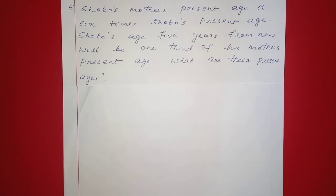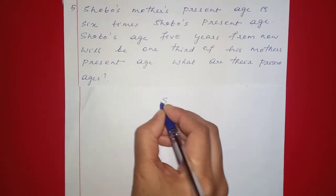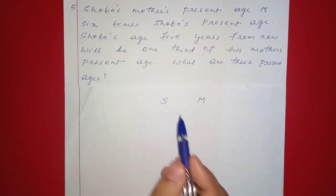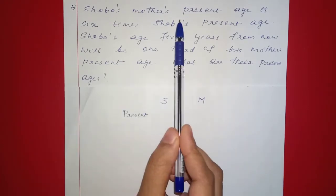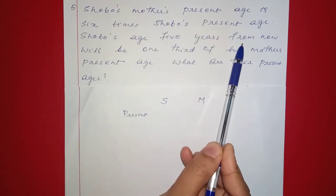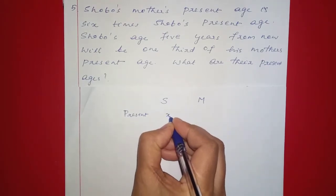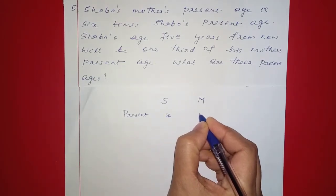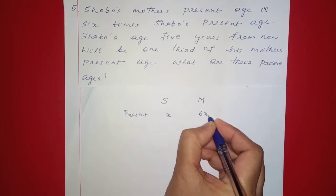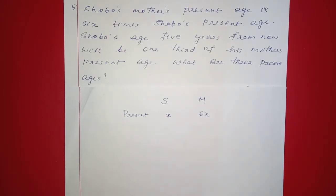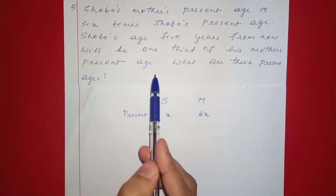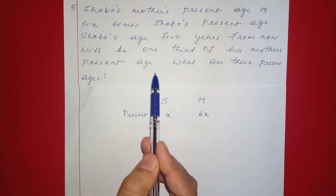Next question: Shobo's mother's present age is 6 times Shobo's present age. Shobo's age 5 years from now will be one third of his mother's present age. What are their present ages?